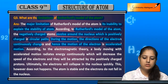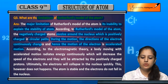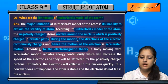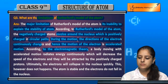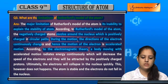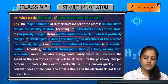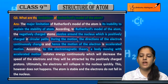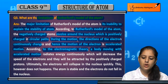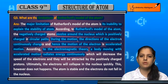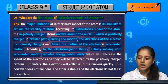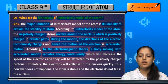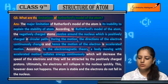If there is acceleration, then according to the electromagnetic theory, any body moving with acceleration radiates energy continuously. So if the electron is accelerating, it loses energy continuously.